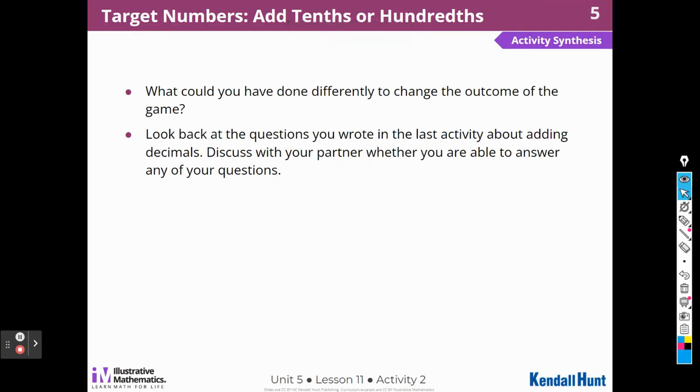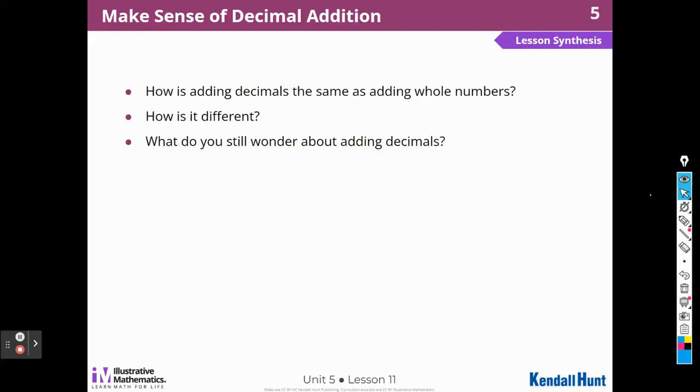What could you have done differently to change the outcome of the game? Look back at the questions you wrote from the last activity about adding decimals. What I could have done differently is not gone with that five hundredths, and then I would have still been in the game. How is adding decimals the same as adding whole numbers? You have to pay attention to place value. And sometimes you have to compose a new unit. So we always might have to carry over something if it's over the place value. How is it different? You have to add the tenths and the hundredths, and there's a decimal point. What do you still wonder about adding decimals? I wonder if I can add thousandths. What if there's a zero in the ones place? Can we use the algorithm like we do for whole numbers?